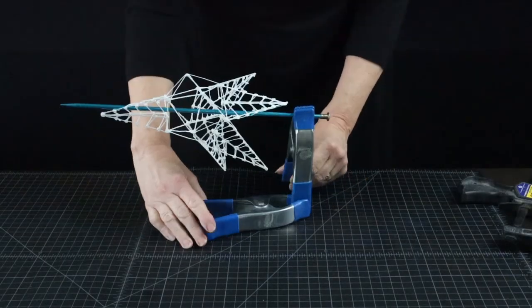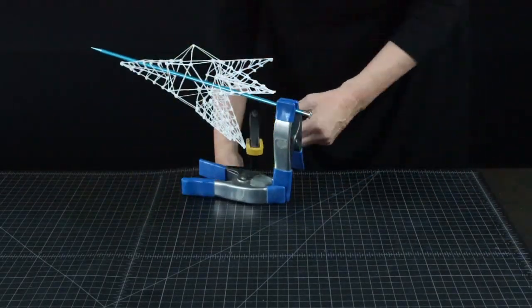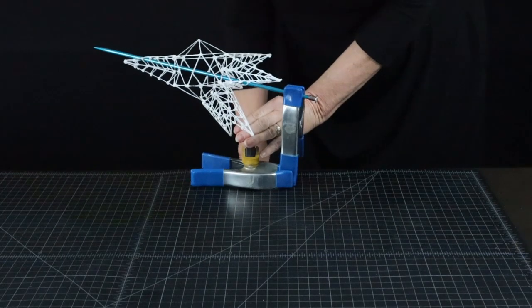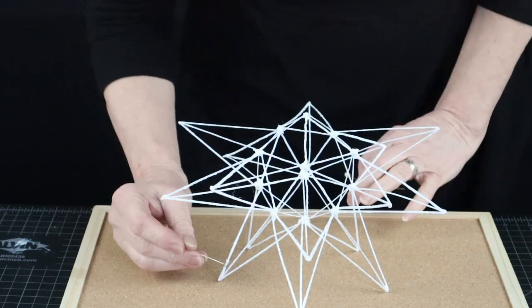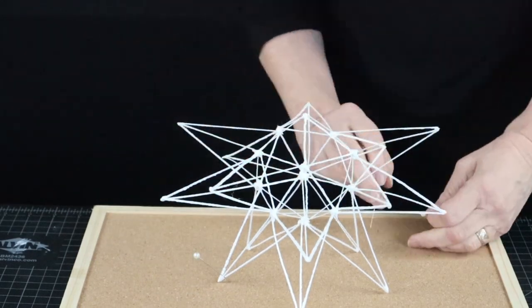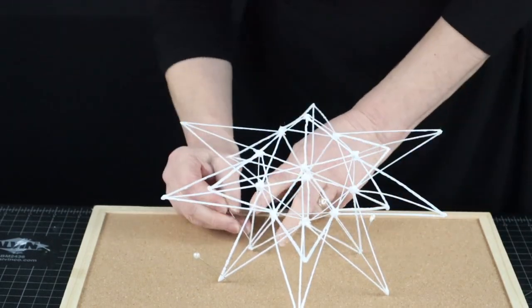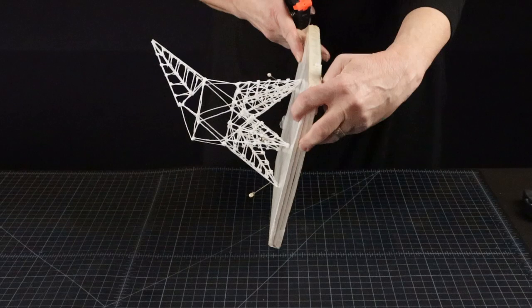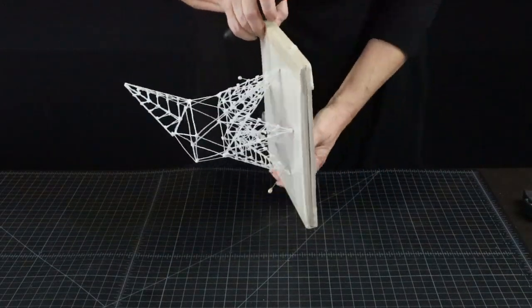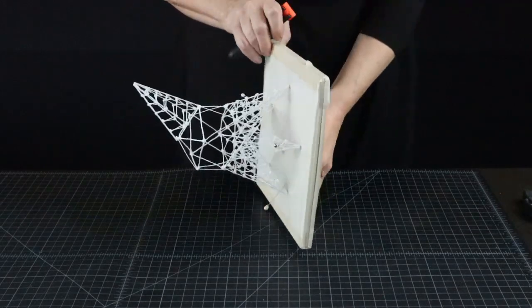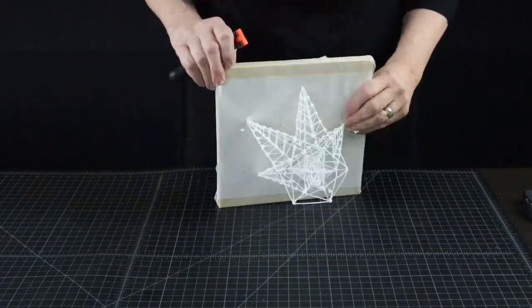If you don't have a suction vise, use what you have. Clips. And pin it to the cork board with those big corsage pins. Or pin it to a few layers of foam core, whatever will keep it steady enough to attach all 20 star points.